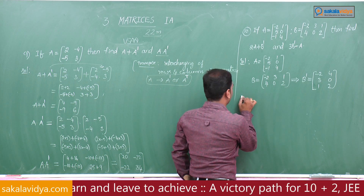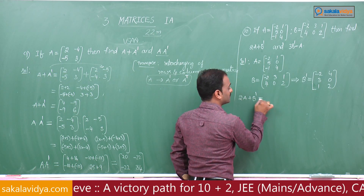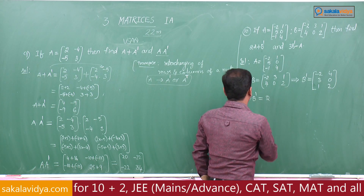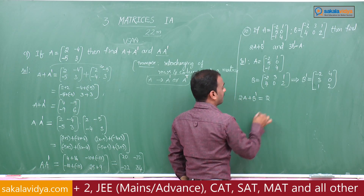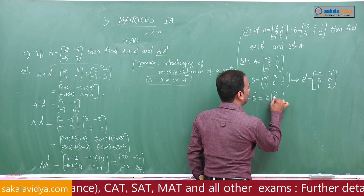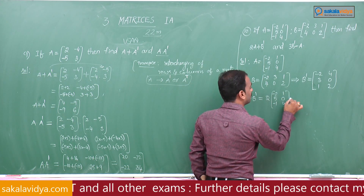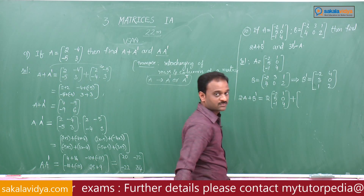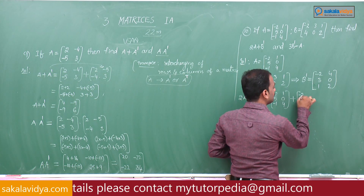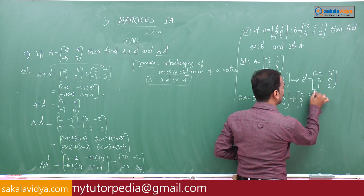Now the first required value: 2A plus B transpose equals 2 into matrix A, that is [[-2, 1, 5], [0, -1, 4]], plus B transpose [[-2, 4], [3, 0], [1, 2]].